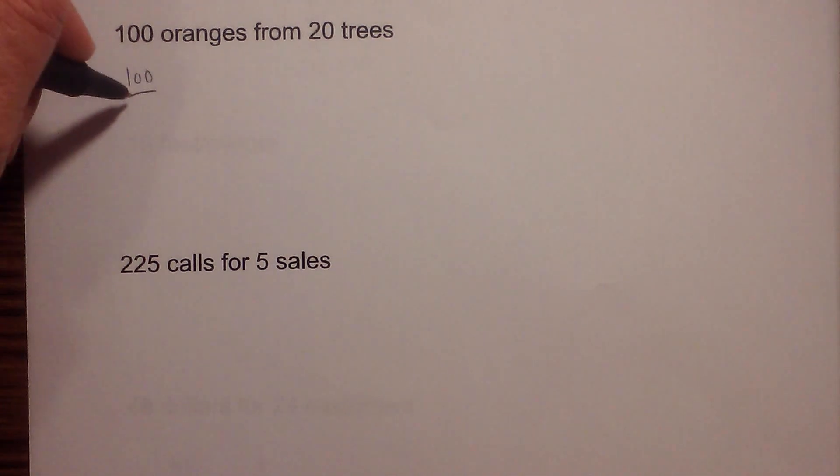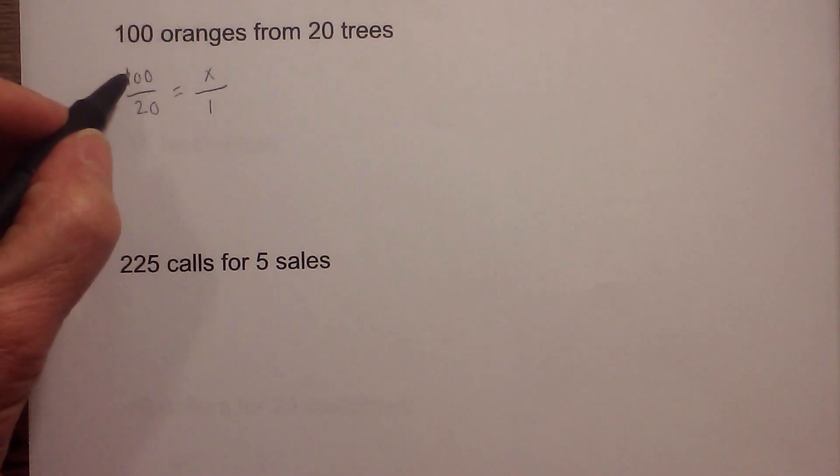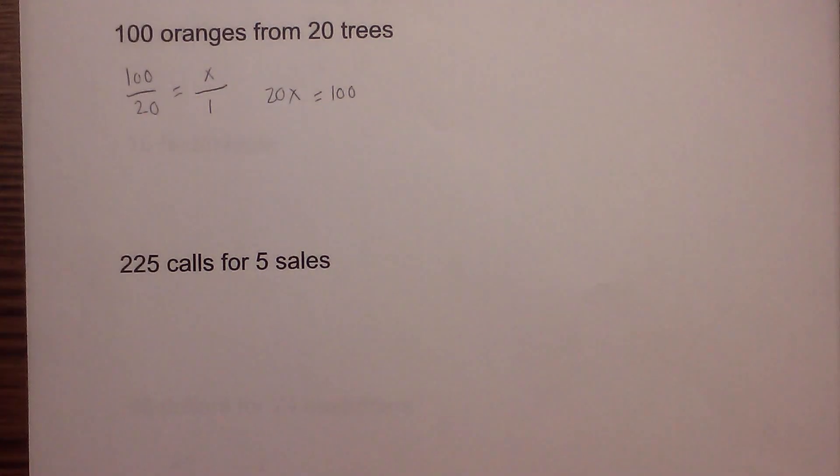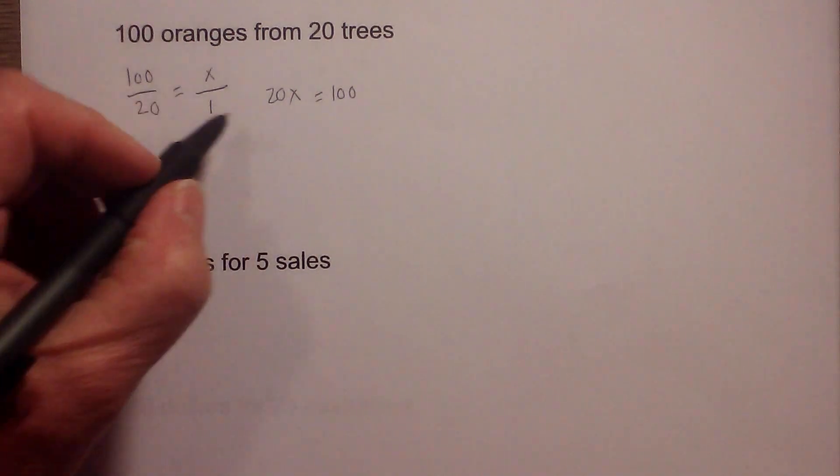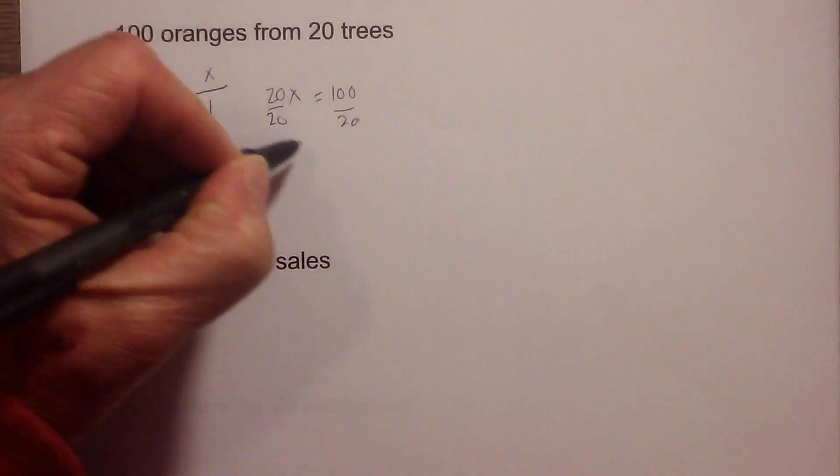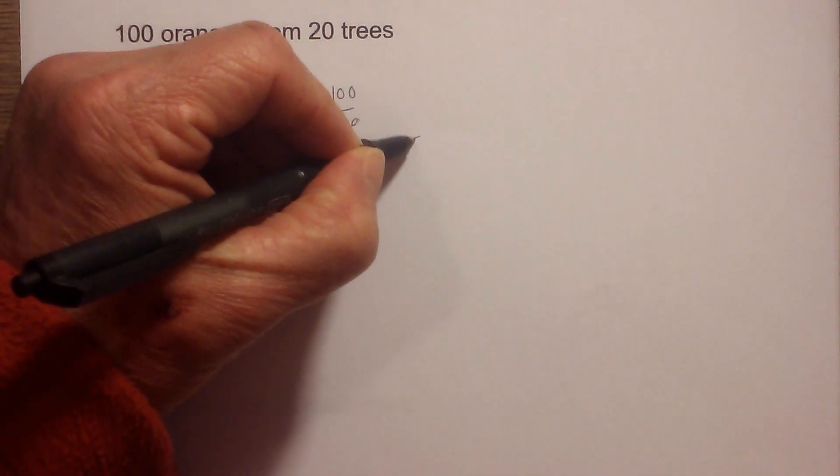Unit rate for 100 oranges from 20 trees. I'm going to write this in fraction form: 100 over 20, and that needs to equal 1 over x. Now I solve for x. I will cross multiply, so that gives me 100 is equal to 20x. I will divide each side by 20. And x is equal to 100 divided by 20, which is equal to 5.